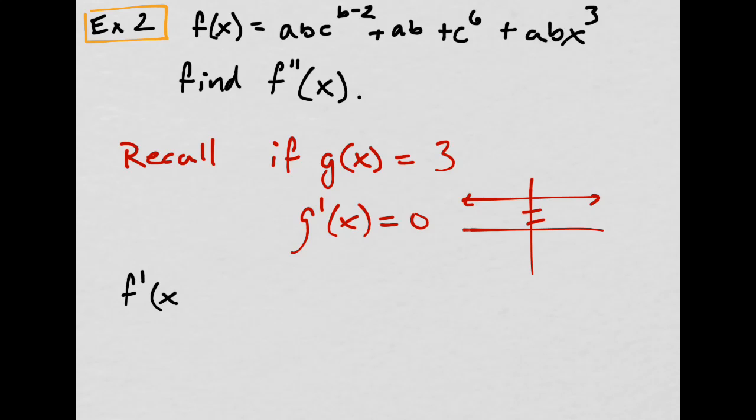So f prime of x equals, remember, you could distribute the derivative operator. That means the derivative of this, plus the derivative of that, plus the derivative of that. We don't take the c and put it out front because c is not a variable, it's a constant. So the first derivative, that goes to 0, that goes to 0, that goes to 0. And then I have, now I need to bring down the 3. So I have 3abx, take away 1, that'd be squared. Oh my goodness, that was easy.